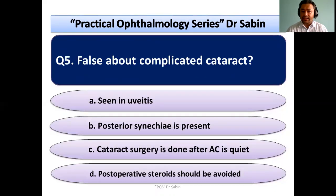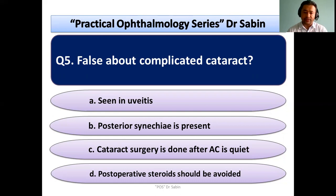False about complicated cataract: we have to find the false statement; three statements are true. Option A: anterior uveitis — yes, it is true. Option B: posterior uveitis is present — it is true. Option C: cataract surgery is done after the anterior chamber is quiet, yes, and only after the anterior chamber is quiet with medications for a minimum period of three months is cataract surgery done. Option D: post-op steroids should be avoided — this is not true and hence this will be the answer.